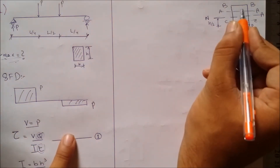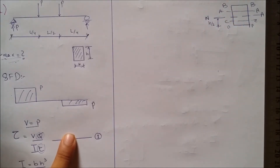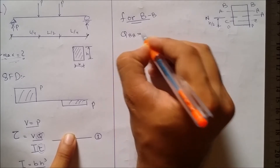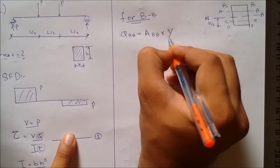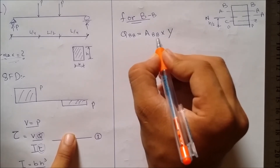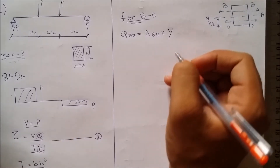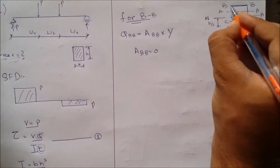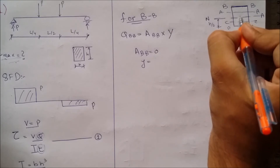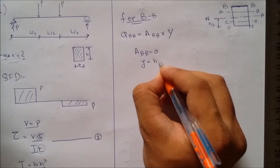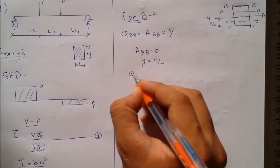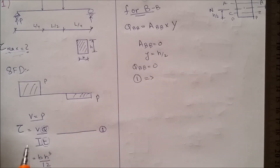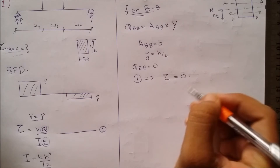Let's start by calculating Q, the first moment of area, for the section we call point BB. Q_BB equals area BB multiplied by Y, where Y is the centroid distance from the area BB to the whole body centroid. The area BB is equal to zero since this is just a line, so Q_BB equals zero. Substituting into equation 1 (VQ/IT), we get shear stress at BB equals zero since Q is zero.